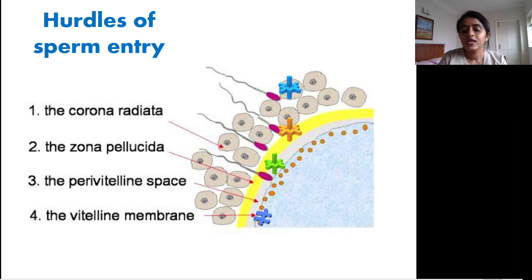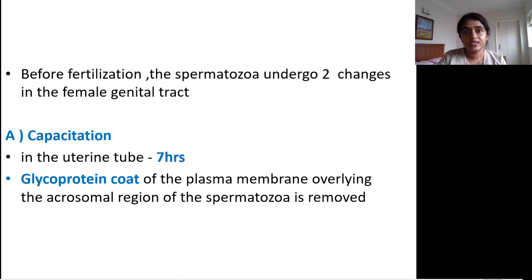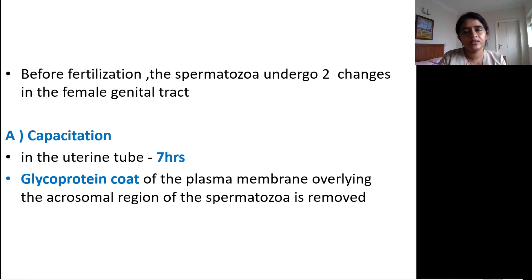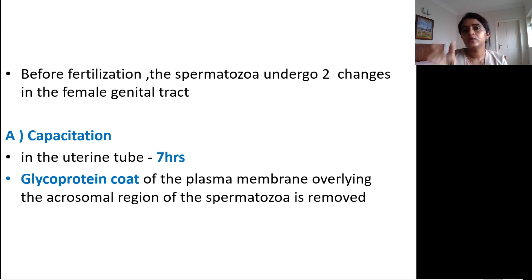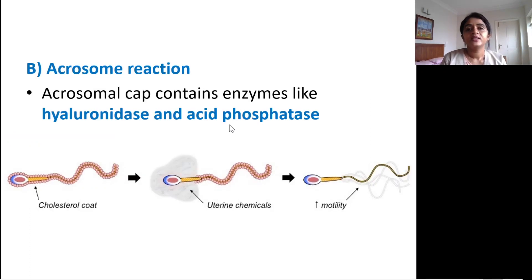Before fertilization, the spermatozoa must undergo two important changes in the female genital tract: capacitation and the acrosome reaction. Once a sperm reaches the uterine cavity, it takes roughly seven hours to reach the uterine tube and undergo capacitation. Capacitation refers to the removal of the glycoprotein coat overlying the plasma membrane of the acrosomal region of the spermatozoa — you can think of it like removing a coat. Only after this coat is removed can the acrosome reaction occur.